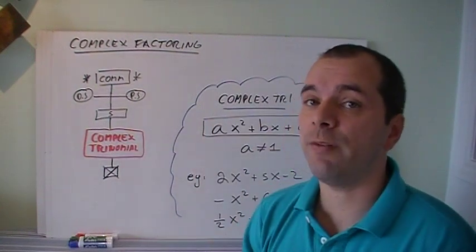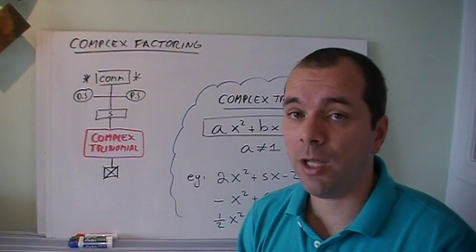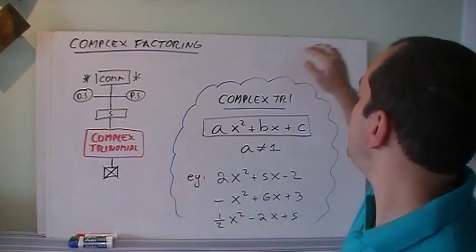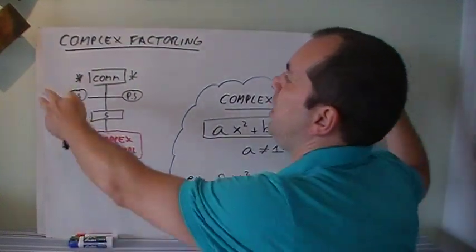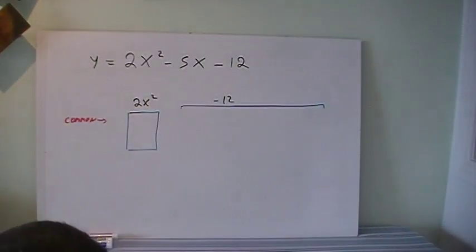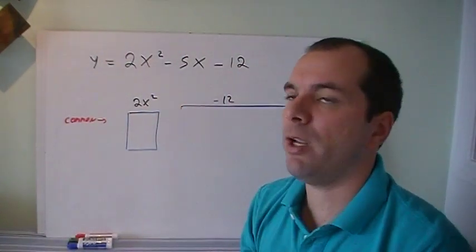There are many different ways of factoring a complex trinomial. But I'm just going to show you the one case that can be used for actually all cases, the ones that I just showed you, and that's the trial and error, or organized trial and error.